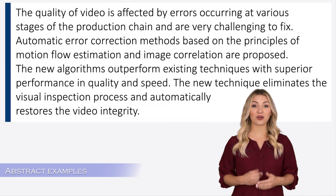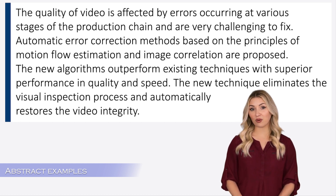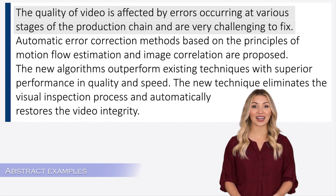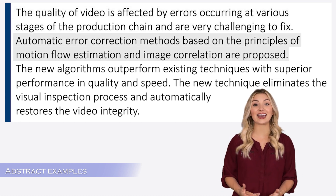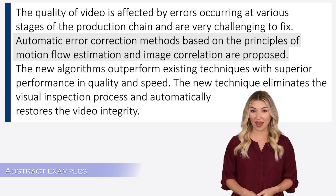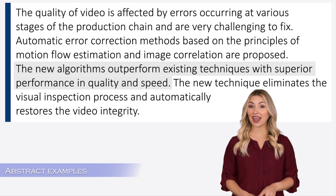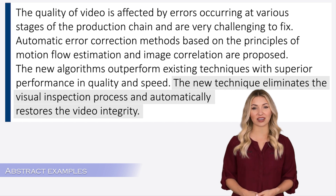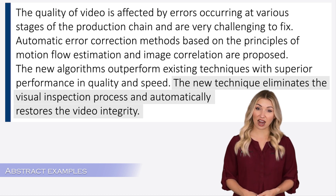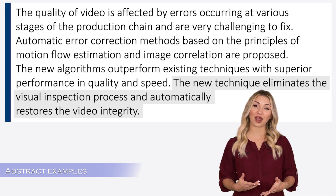Here is another example. This example is from an engineering research paper. The authors are starting with the topic, saying that their topic relates to removing errors from digital video. Then they are explaining the method — they have proposed a new technique that can fix these errors automatically. Then they are presenting the results, saying that their methods are faster and superior to existing methods. Finally, they finish with the implications of their study: their methods will remove the need for the painstaking process of visually inspecting the video for errors.